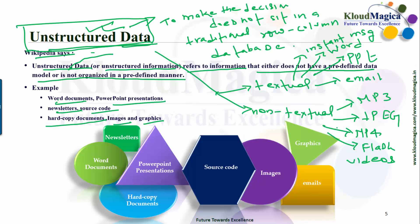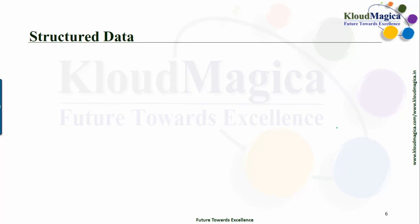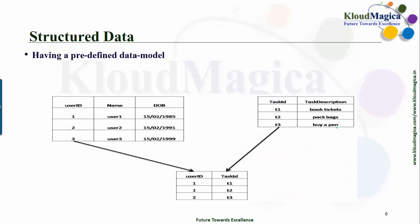So I hope you have understood unstructured data. So let's discuss what is structured data. So entire world knows that big data contains unstructured data but most of them are in doubt that does big data handle structured data as well? The term structured data generally refers to data that has a defined length and format for big data.